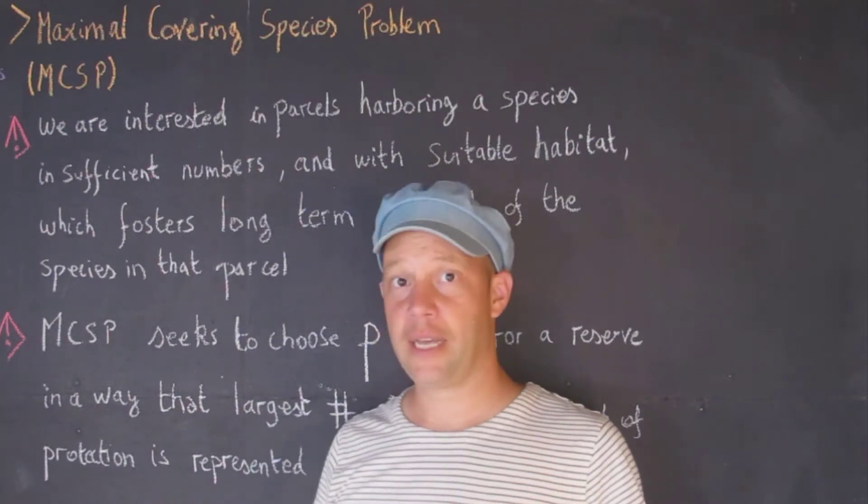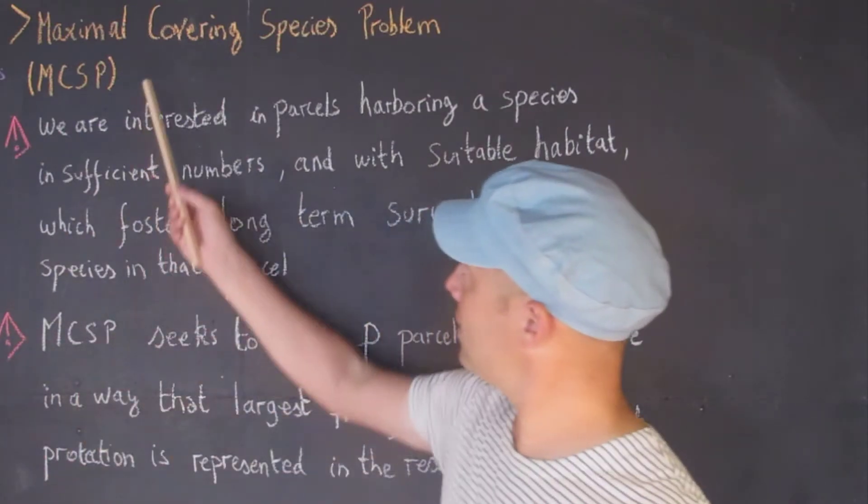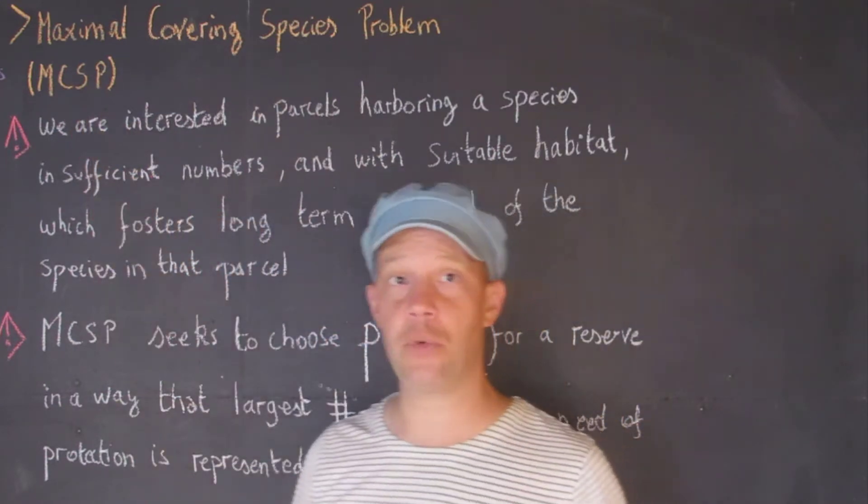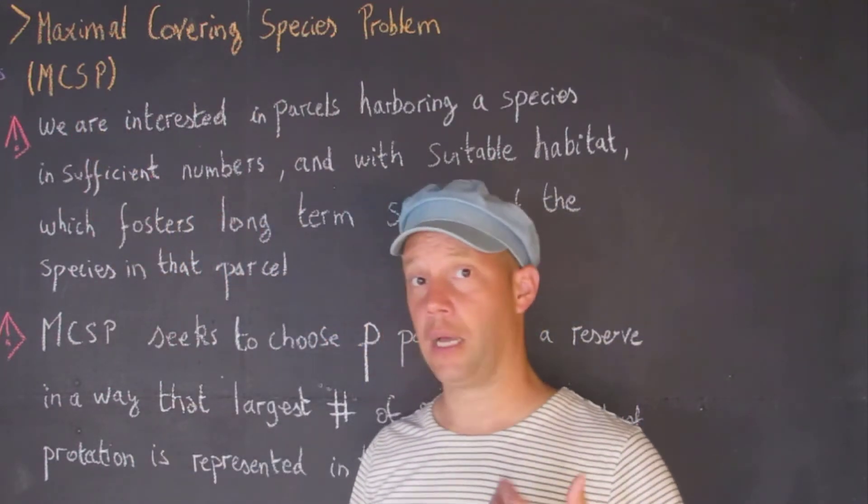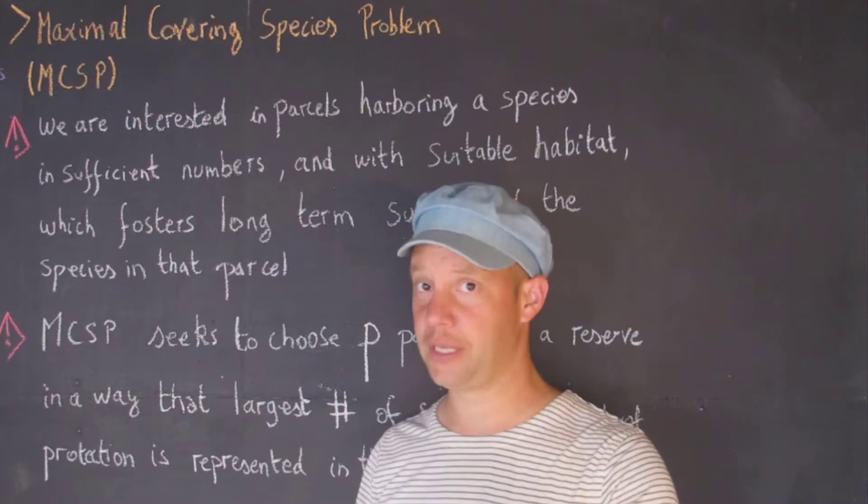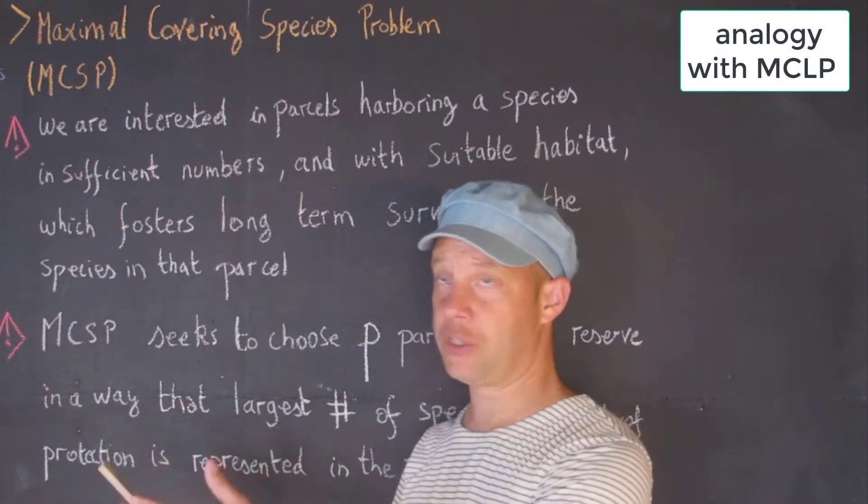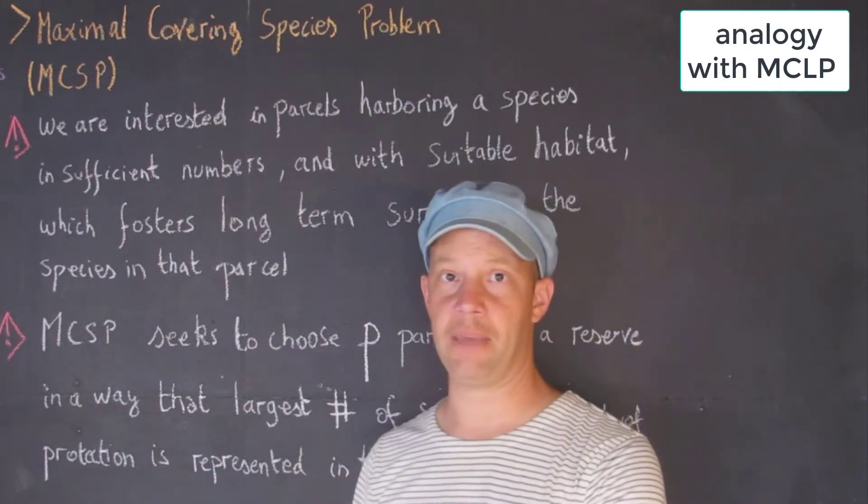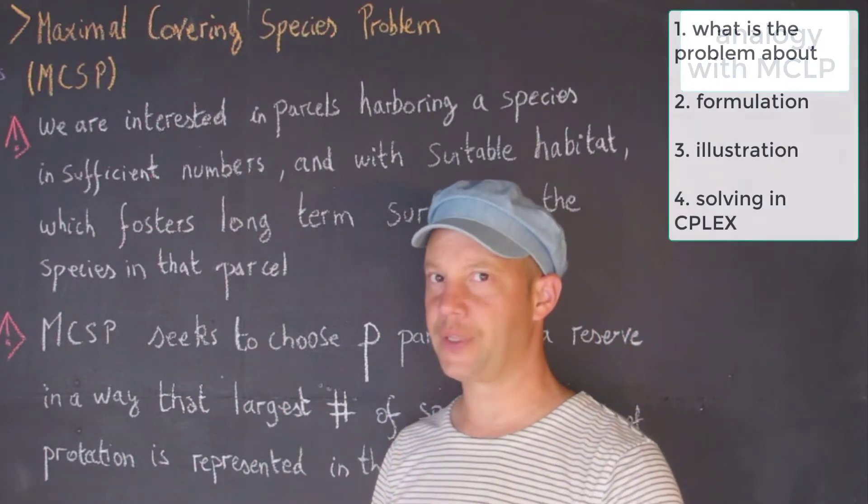Hi everyone, the second model I'd like to talk to you about is the Maximal Covering Species Problem or MCSP, which in fact is a little bit different than the species set covering we talked about earlier, but has a lot of analogy with the Maximal Covering Location Problem or MCLP.